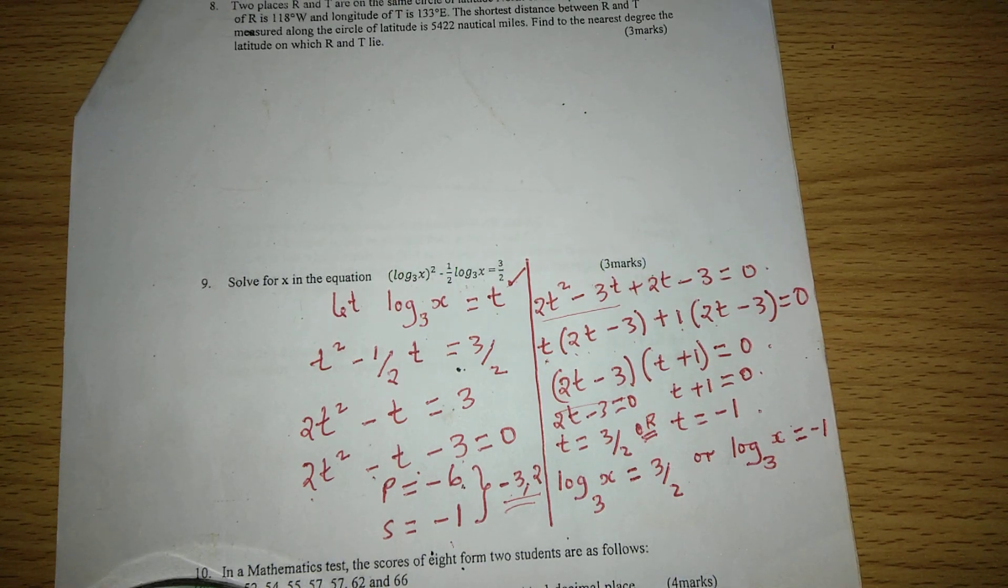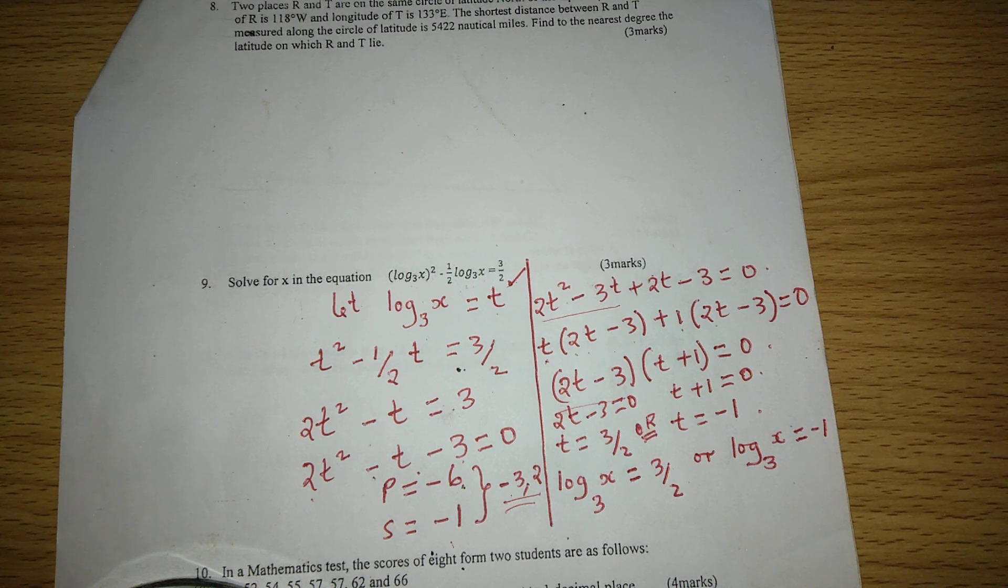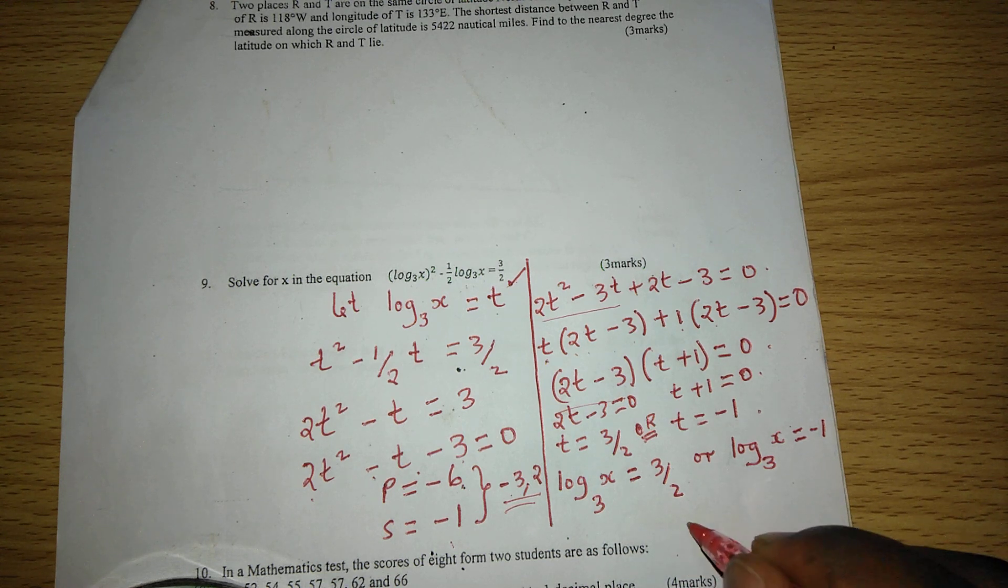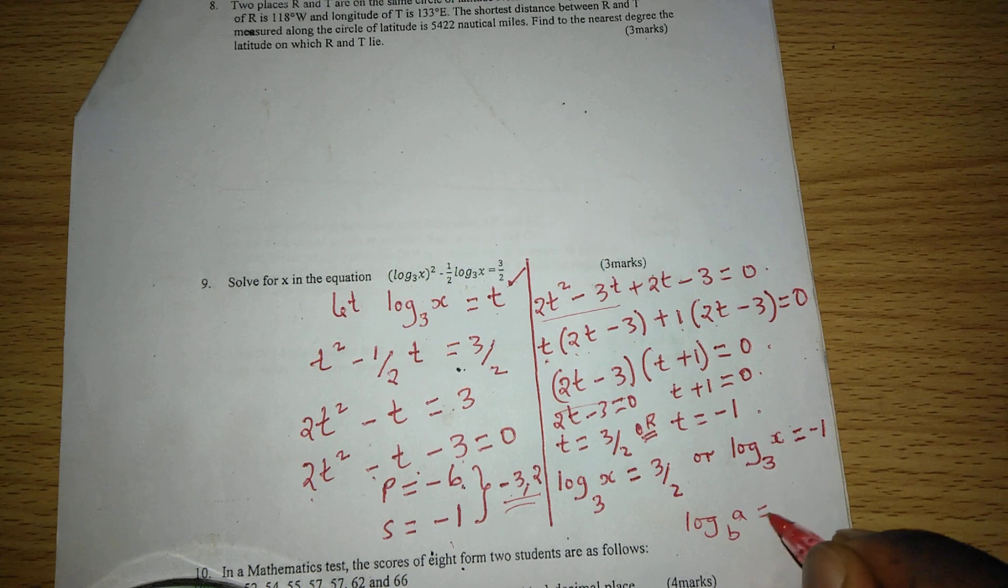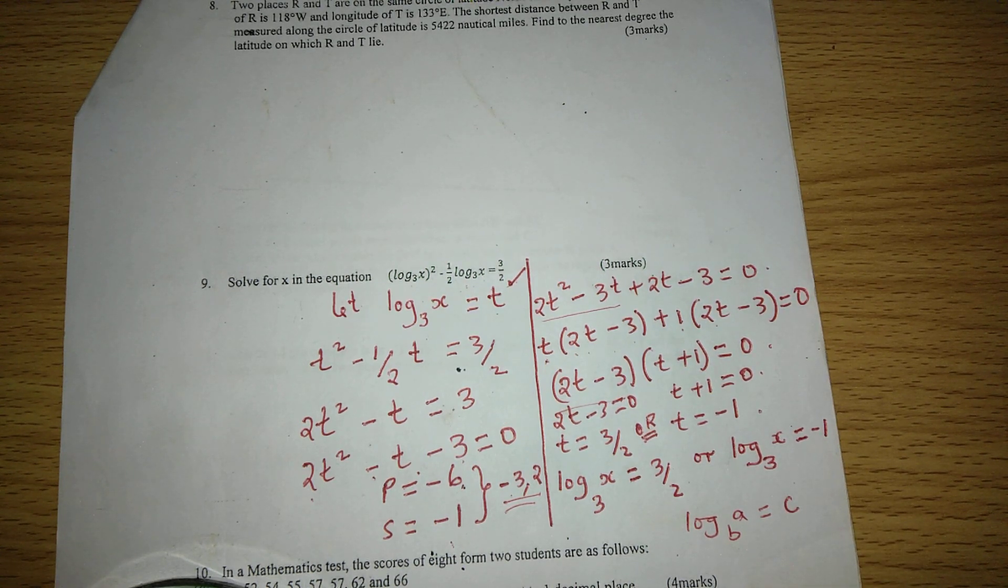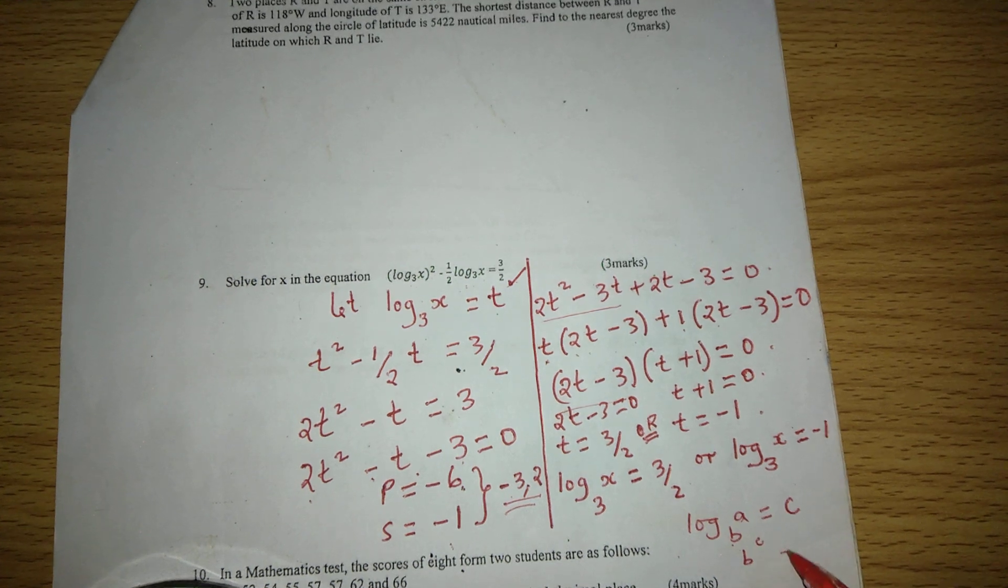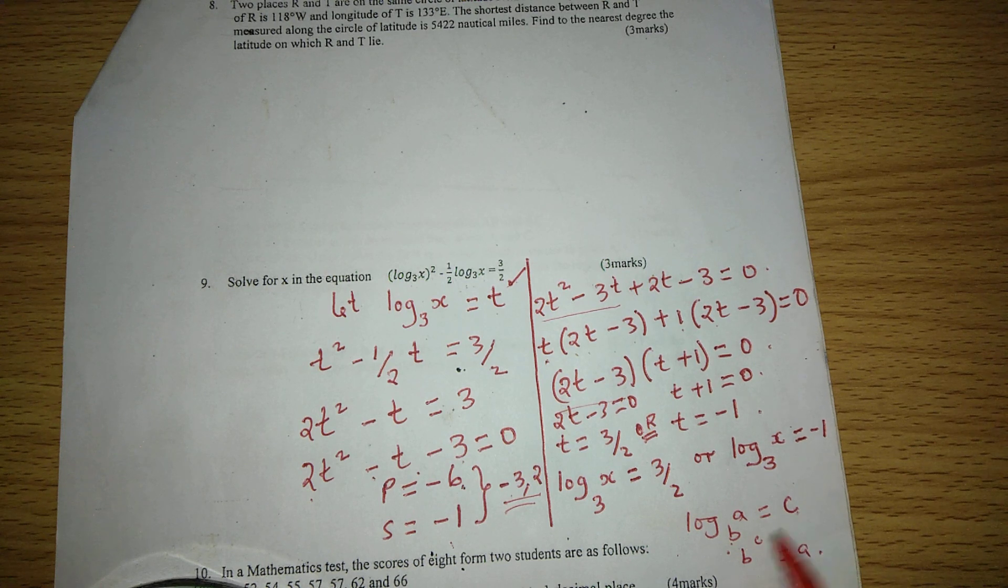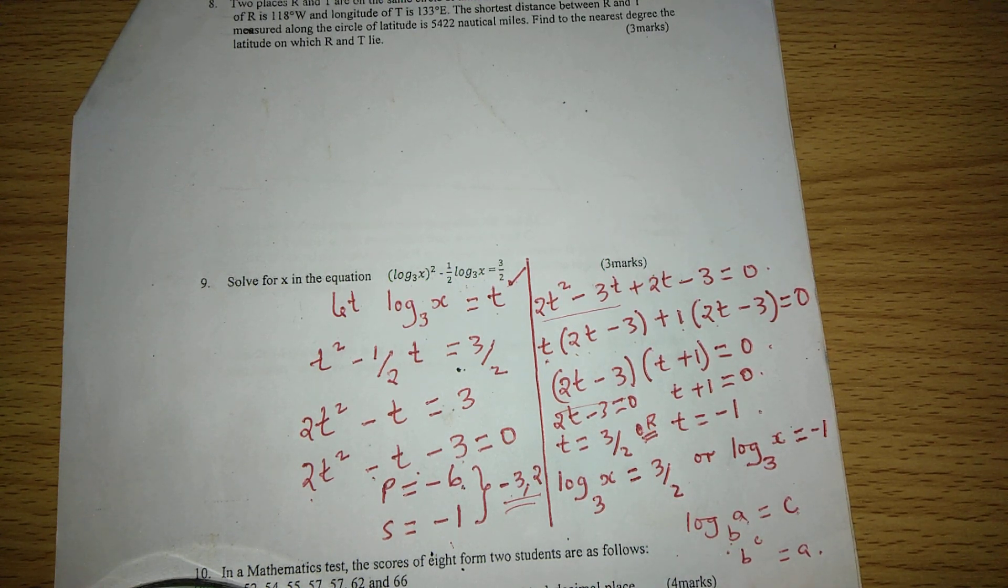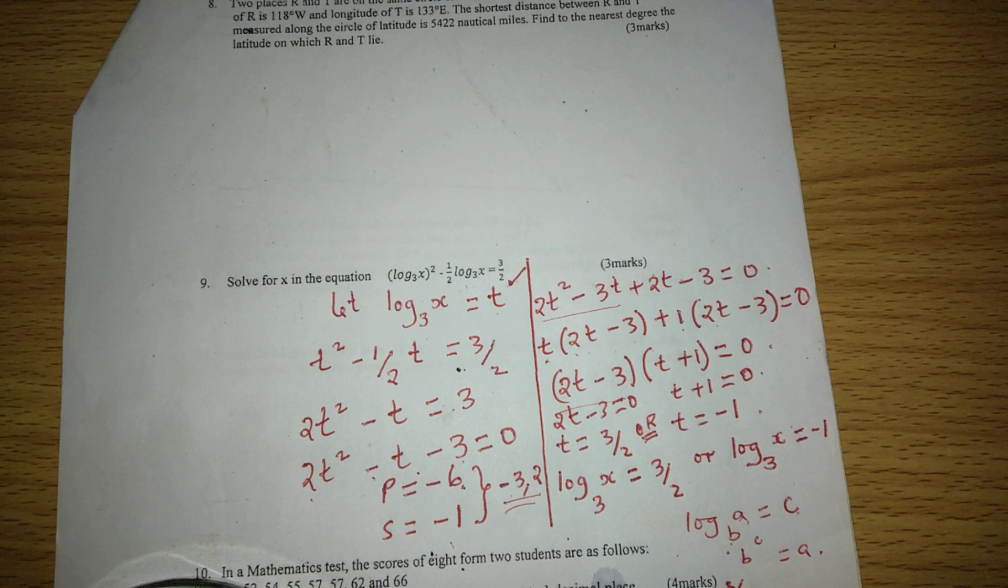Now we can solve the two parts independently, and here we go to what we call logarithm notation to index notation. We can reverse these expressions from being logarithm to index notation. When an expression has been written such that the logarithm of a to base b equals c, it means that when we take b raised to c, we should get a. Therefore, in this case, we can say 3 raised to 3 out of 2 is equal to x, or 3 raised to negative 1 equals x.